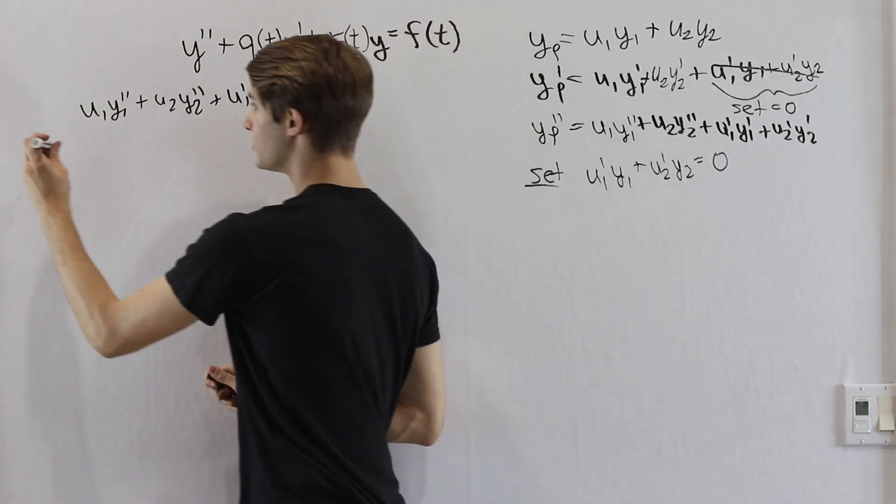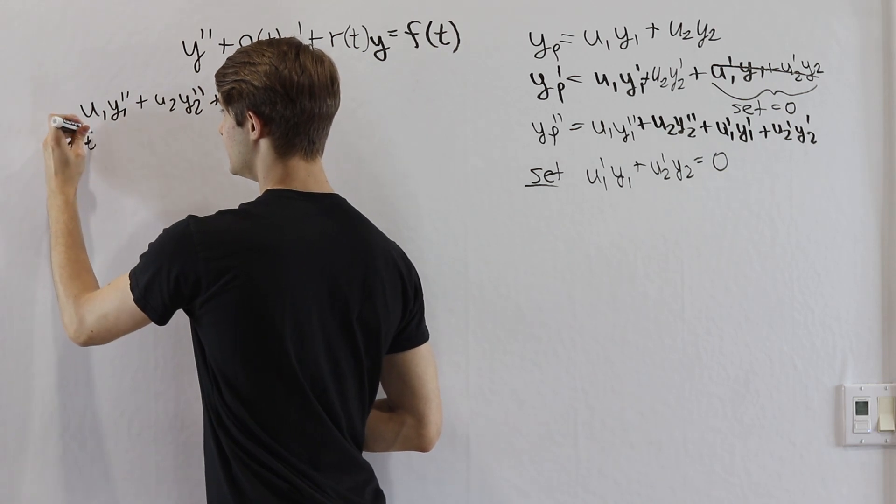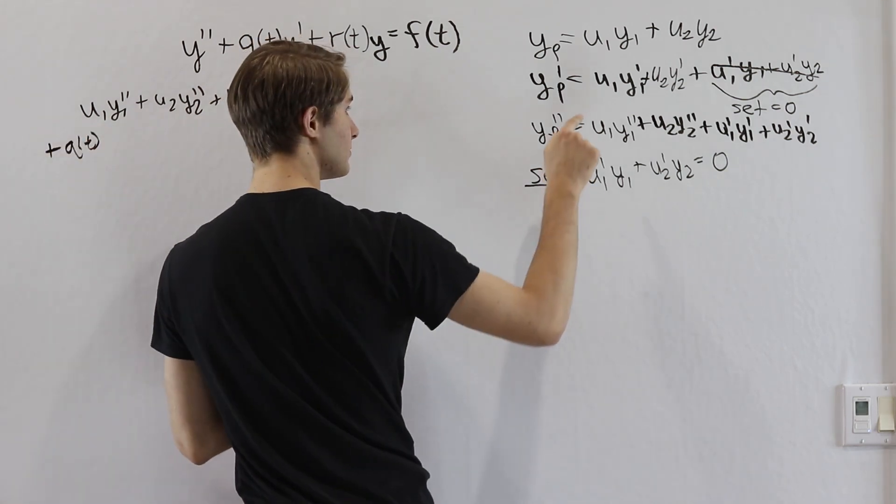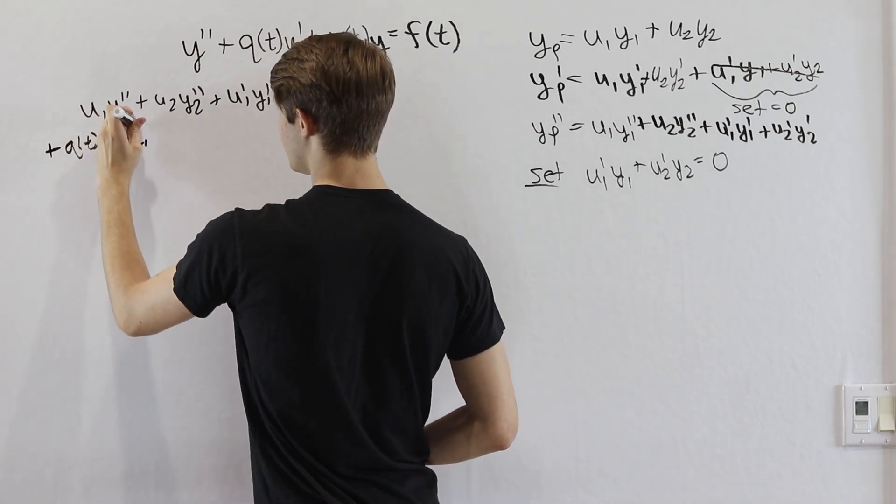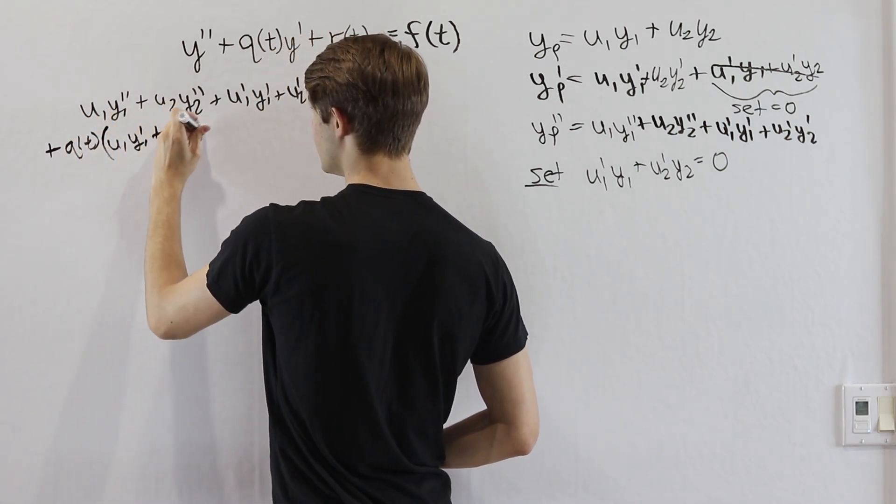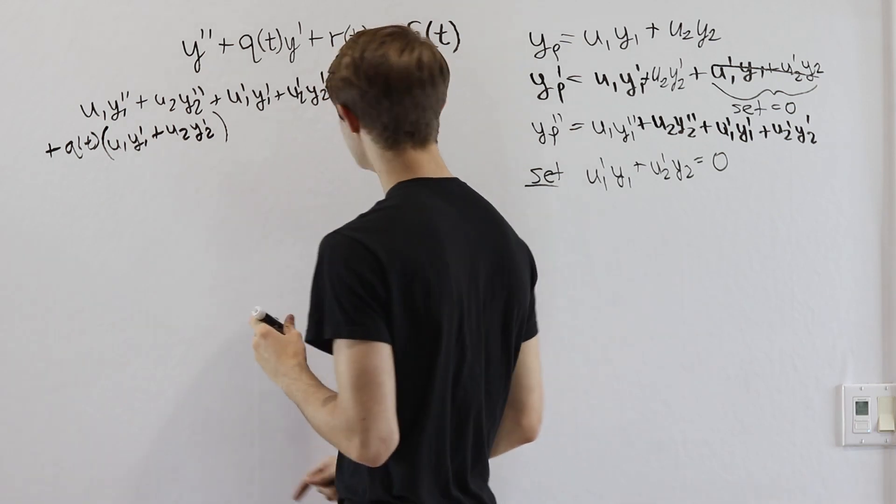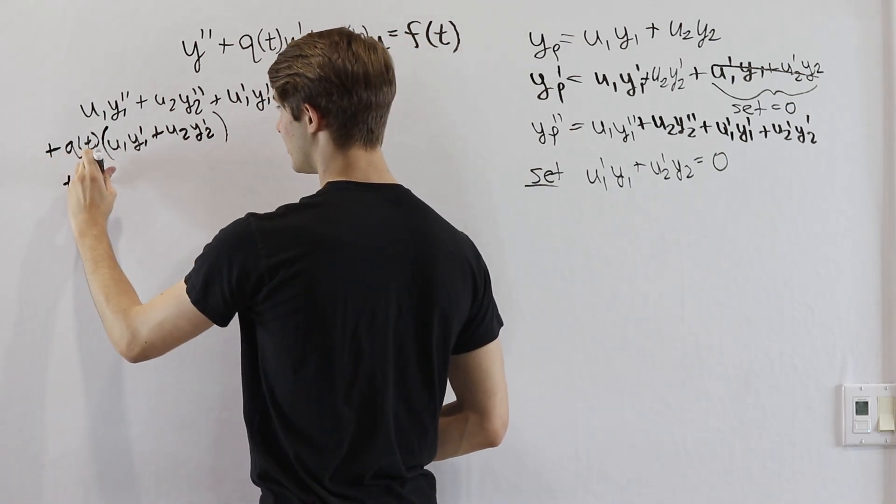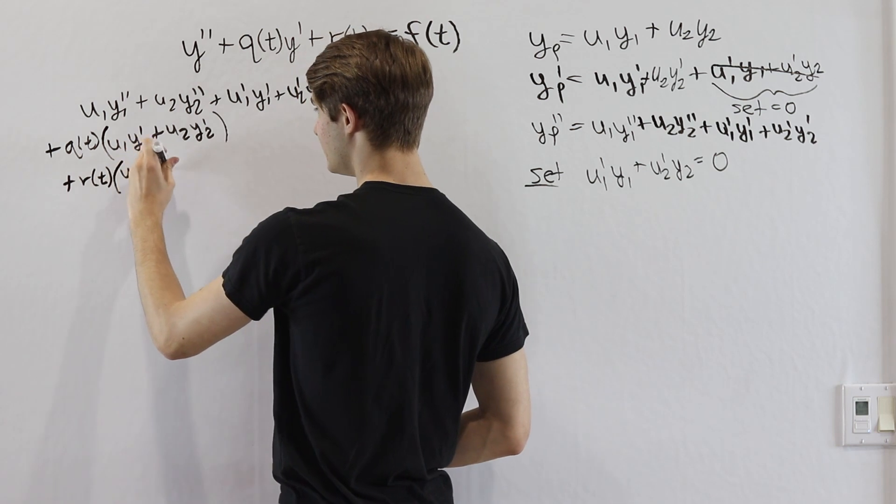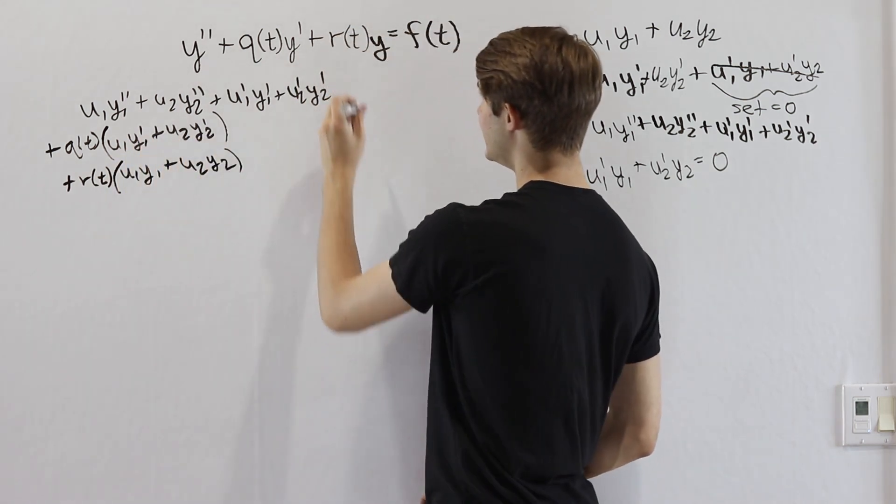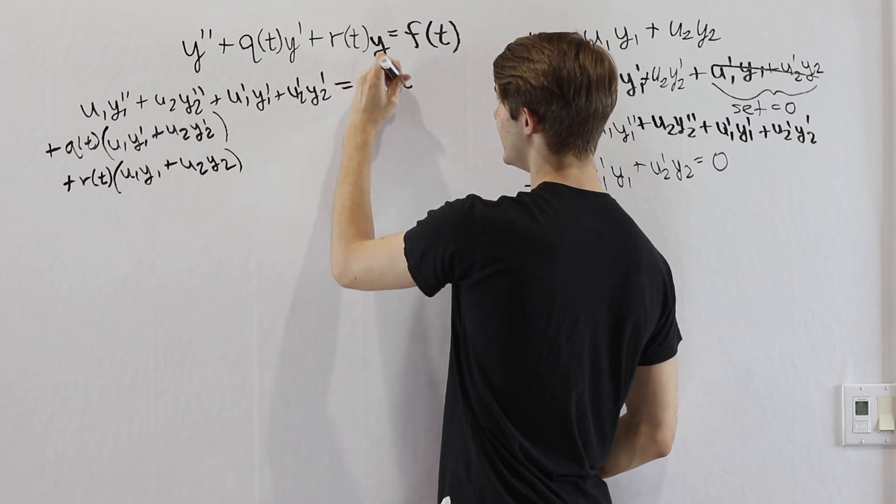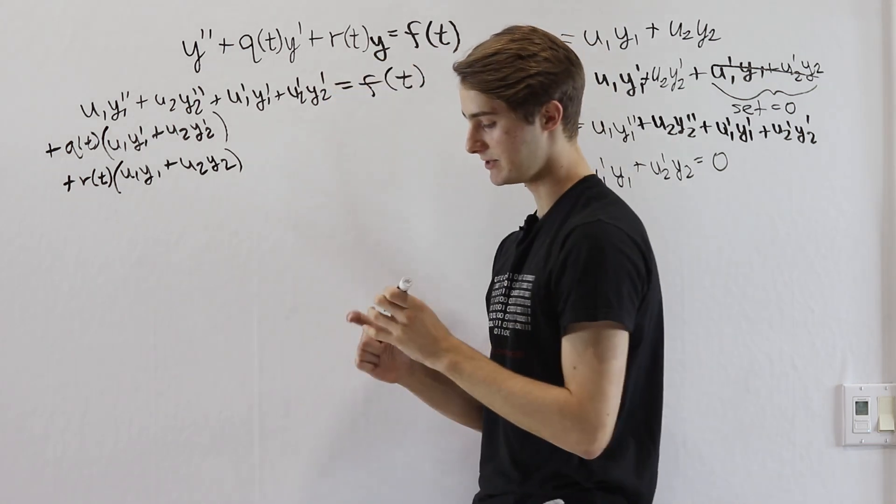So after this we'll have plus q(t), and then our yp prime is going to be this part. So u1y1 prime plus u2y2 prime and that's it. And then we add r(t) times u1y1 plus u2y2. And this whole thing is going to equal our f(t) right up here.